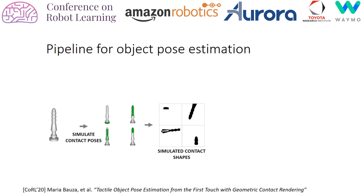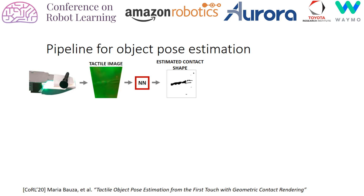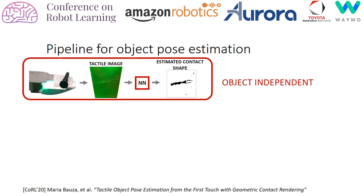In the real world, we observe tactile images from the sensor, and we use a general network to estimate the contact shape — the contact that is made on the sensor. This gives us a way to go from tactile images to estimated contact shapes, which is object-independent, because contact shape does not depend on the type of object contacting the sensor.